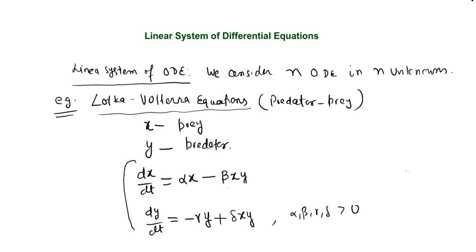We have 2 differential equations in 2 unknowns x and y, both functions of t. Here t is the independent variable, and x and y are dependent on t. To solve these problems, you need to find x and y in terms of t.